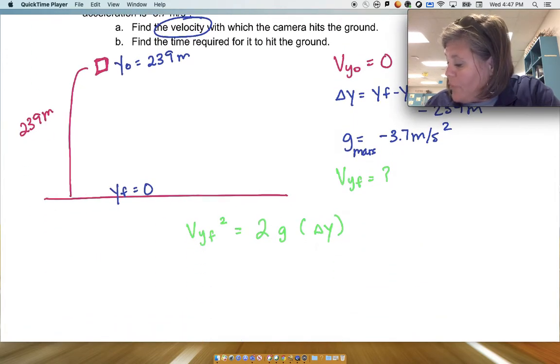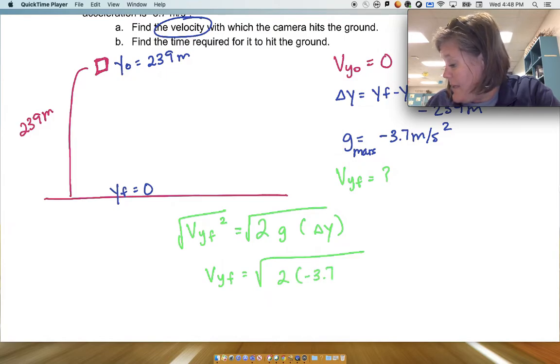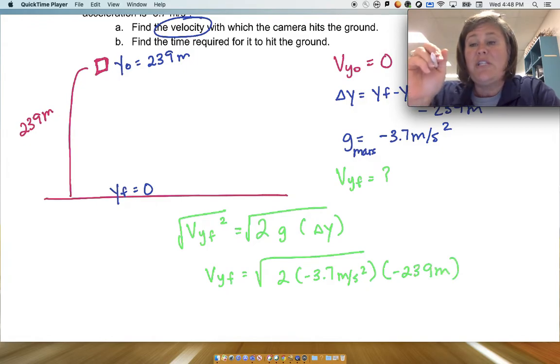So now I want to solve for the final vertical velocity. So I have to take the square root of both sides. So the final vertical velocity is the square root of 2 times -3.7 meters per second squared times -239 meters.